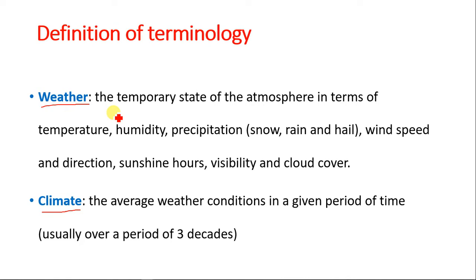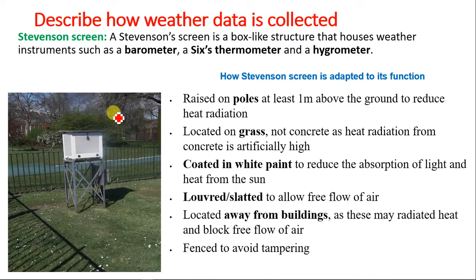Now, definitions of key terminology: what is weather and what is climate? Weather is the temporal state of the atmosphere in terms of temperature, humidity, precipitation (which can be in the form of snow, rainfall and hail), wind speed and direction, sunshine hours, and visibility. Climate is the average weather conditions in a given area over a long period of time, usually approximately 30 to 35 years. So if I get temperature data for a day, I'm looking at the weather, but when you've collected temperature data for approximately three decades and get the average, you are looking at climatic data.